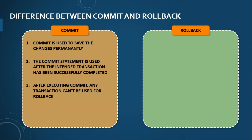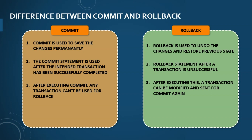Commit is used to save changes permanently in the database, whereas rollback is used to undo changes and restore the previous state. The commit statement is used after a successfully completed intended transaction. The rollback statement is used after a transaction is unsuccessful due to circumstances like system failure. After executing a commit command, a transaction can't be rolled back. On the other hand, after executing the rollback command, a transaction can still be modified and sent for commit again.